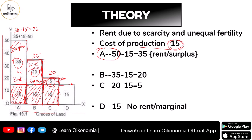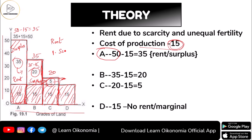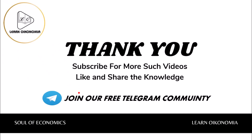Moving to Grade D land, the production output is 15, and there is no surplus or no rent. For this reason, we call Grade D land the no-rent land or marginal land. This is how Ricardo presents his theory — rent arises as a result of two reasons: one is scarcity, and the second is unequal fertility. Grade A land is most fertile and Grade D land is least fertile.